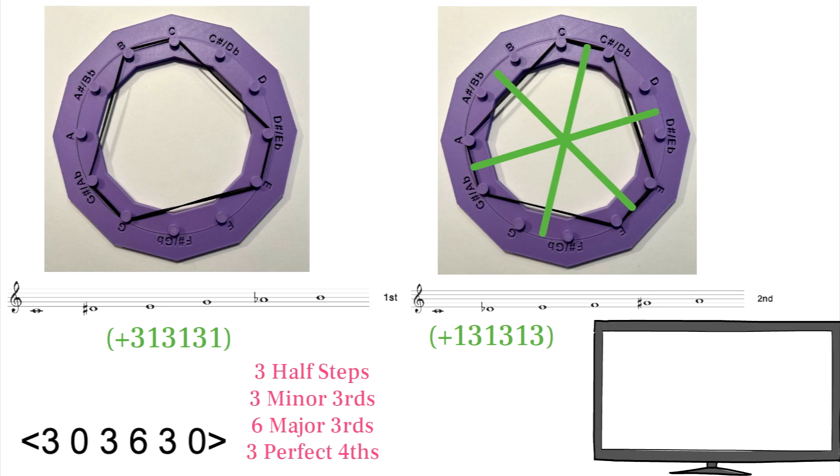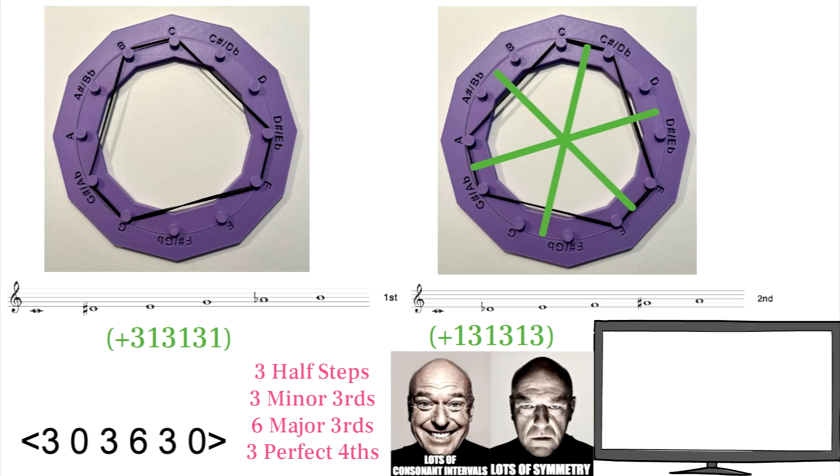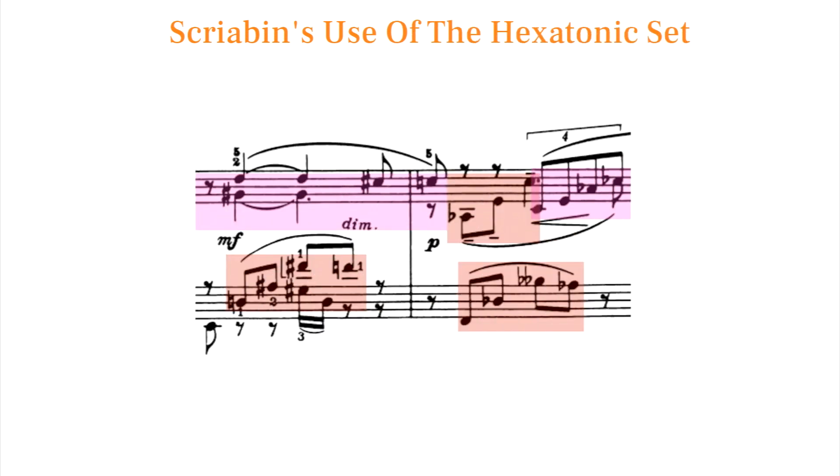It contains the following concentration of intervals which are mostly consonant, but its symmetry in three half steps make it sound dissonant overall. Scriabin uses the entire hexatonic set briefly in his 8th sonata moving from an E mystic chord to a hexatonic set built on F.